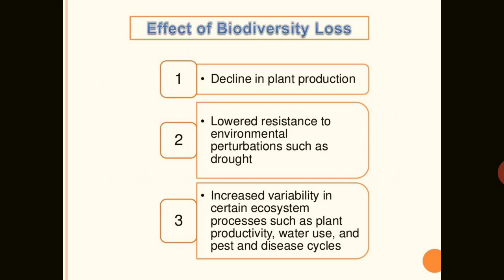The effects of biodiversity loss include: first, a decline in plant production; second, lower resistance to environmental perturbations such as drought conditions; and third, increased variability in certain ecosystem processes such as plant productivity, water use, and pest and disease cycles. These are the major effects of biodiversity loss.